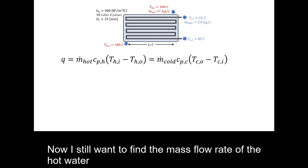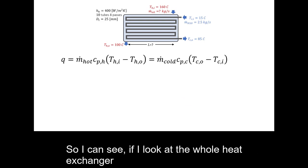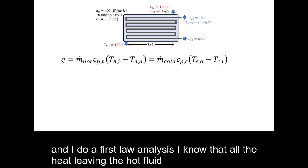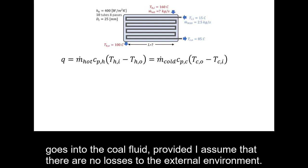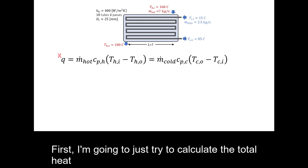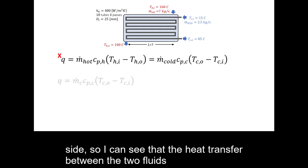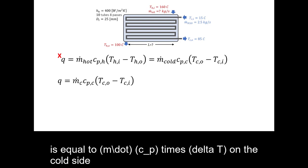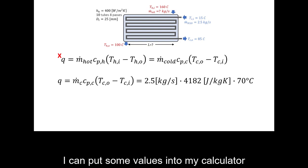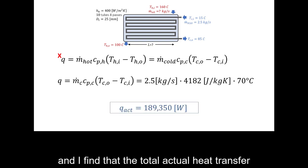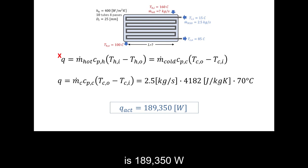Now I need to find the mass flow rate of the hot oil. Looking at the whole heat exchanger and applying a first law analysis, I know all the heat leaving the hot fluid goes into the cold fluid, assuming no losses to the surroundings. Since I know everything on the cold side, the heat transferred is Q = m_dot · Cp · ΔT on the cold side. Plugging in values, I find the total actual heat transfer is 189,350 watts.